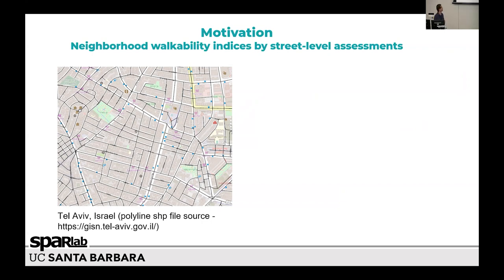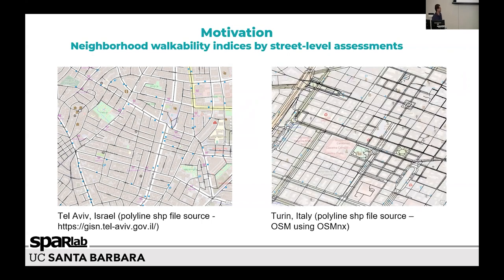In Tel Aviv, it was quite simple to generate this simple network, because there is an open source from Tel Aviv municipality with a lot of GIS data that everyone can access. But in Torino, it was quite difficult — we didn't have that kind of open source. So we decided to go to OpenStreetMap. OpenStreetMap is amazing, of course. The goal, as I understand it, is to reflect actual reality as much as possible.